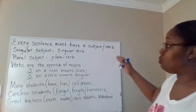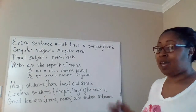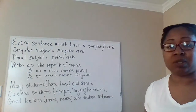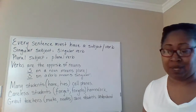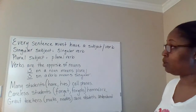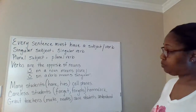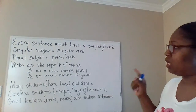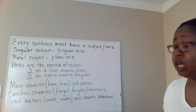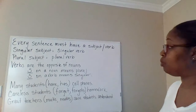Look at our first one. First of all, you must remember that every sentence must have a subject and a verb. If you don't have a subject and a verb, you probably have a fragment. So make sure that every sentence has a subject and a verb. Your subject of a sentence can only be a noun or a pronoun. If you have a singular subject, you must have a singular verb. If you have a plural subject, you must have a plural verb.